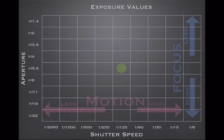Then there's the ISO — very similar. Let's say you're at f5.6 again and 1/25. Instead of increasing the amount of light with aperture or shutter speed, what you can do is just increase the ISO. So you could be at ISO 100 and then increase it to 200 — that doubles the amount of light.